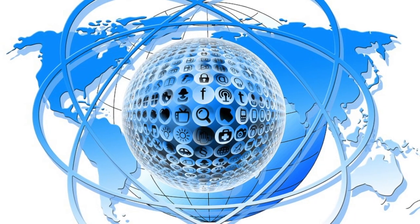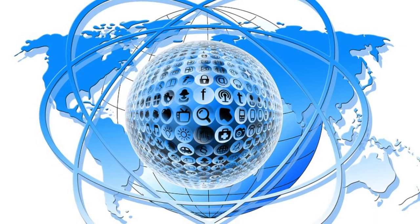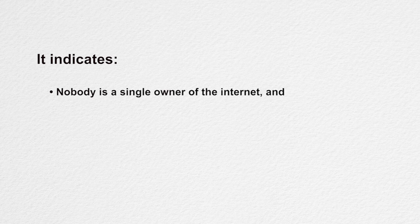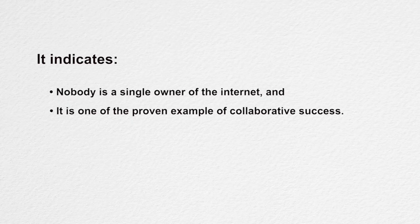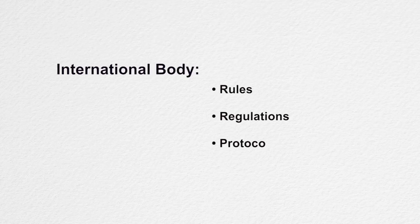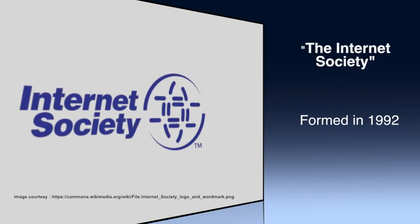The internet, as the name suggests, is a network of networks — that is, it is a collection of several small, medium, and large networks. This clearly indicates one fact: nobody is a single owner of the internet, and it is one of the proven examples of collaborative success. You must be surprised how such a large network spread across continents can run without any problem. To monitor such a large network, we require an international body which can frame the rules, regulations, and protocols to join and use this network. Therefore, an international organization known as the Internet Society was formed in 1992 to take care of such issues.